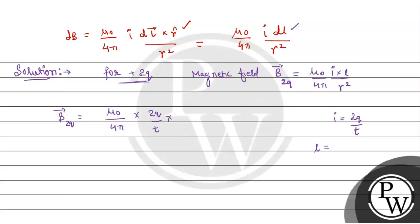Length l, the distance traveled, velocity v and time t, so we write velocity v into time t. And in distance form, r square, the distance is a square. So for 2Q charge, how much magnetic field is produced, we calculate this as μ₀/4π, 2Q, t cancelled, v/a².